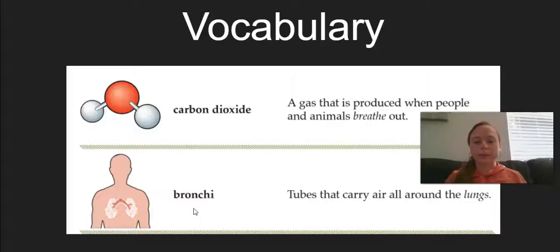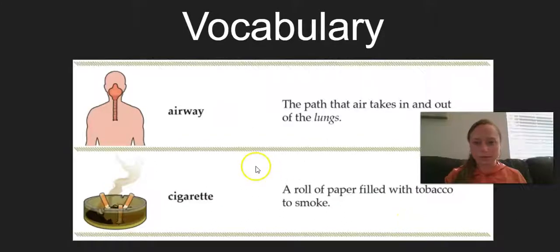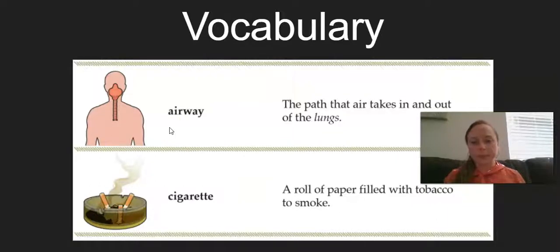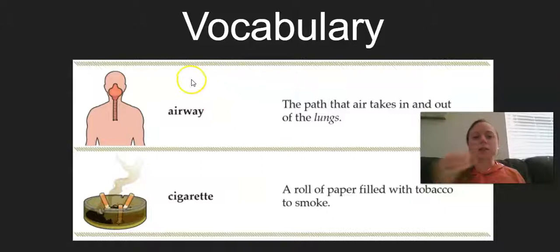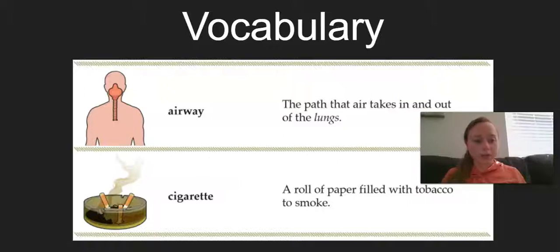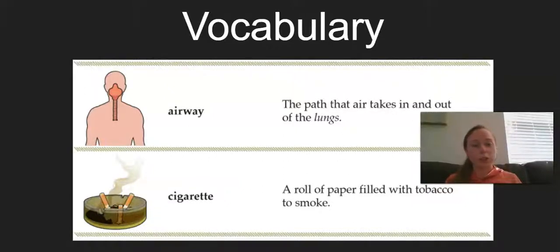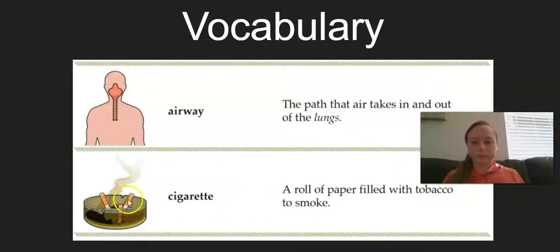Next up is the word bronchi. These are tubes that carry air all around the lungs. Then we have airway. Can you circle airway? That is the path that air takes in and out of the lungs. Next we have the word cigarette. We saw an example of these in our video we just watched. Can you circle the picture of cigarettes? A cigarette is a roll of paper filled with tobacco to smoke.